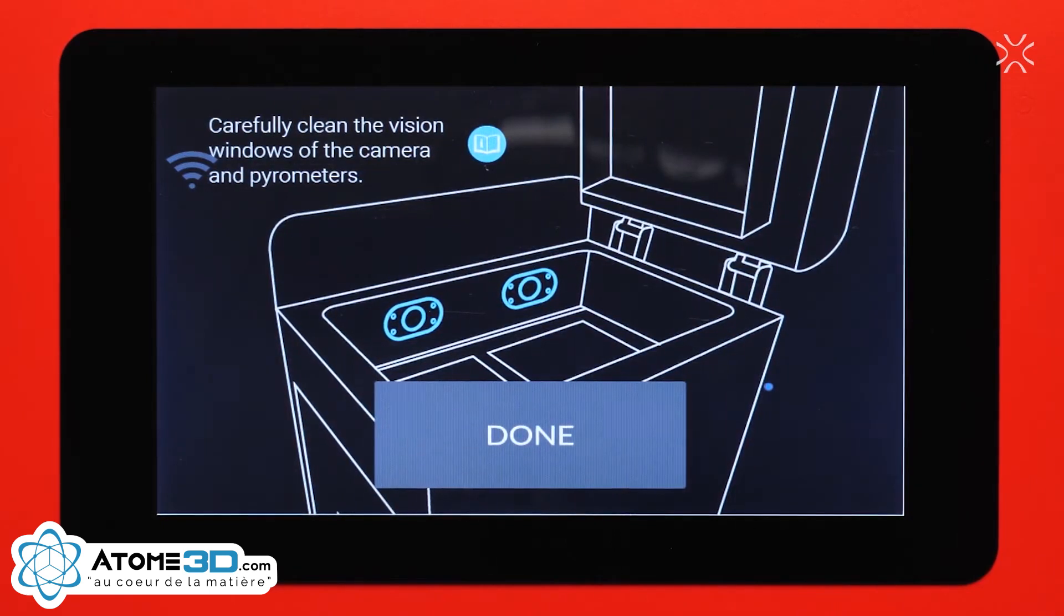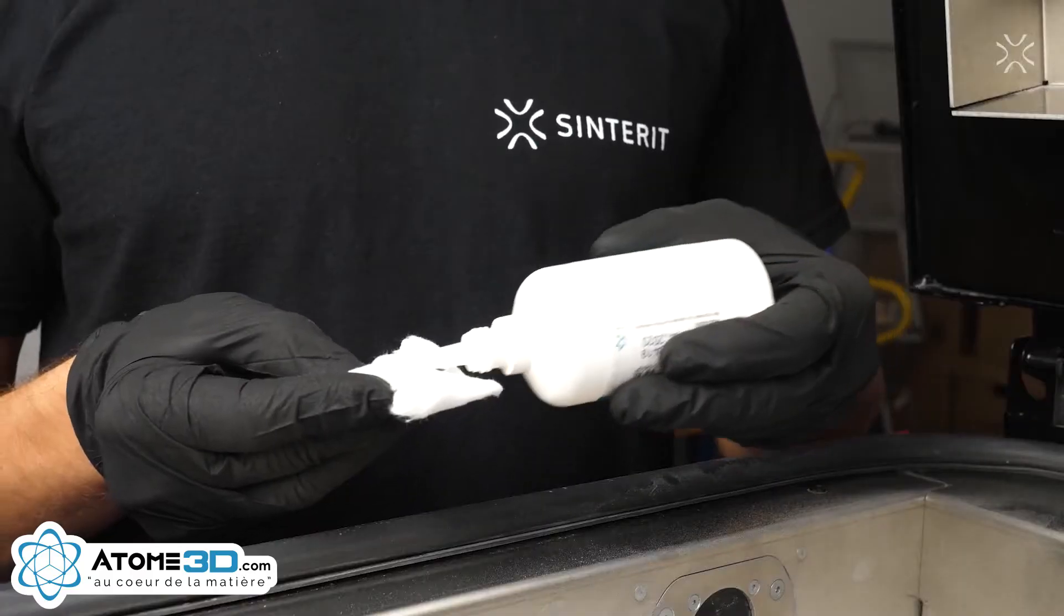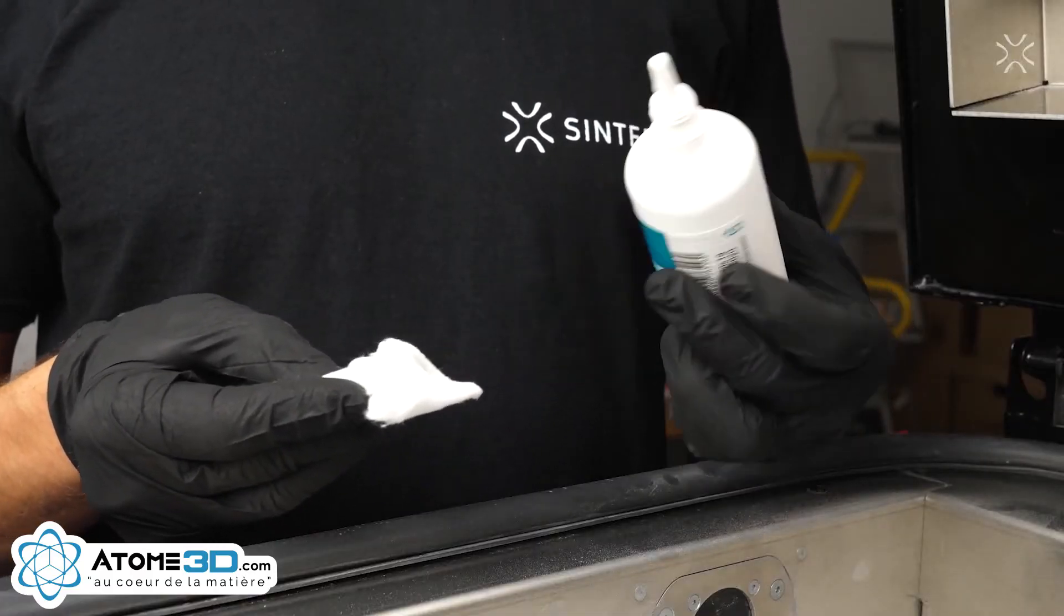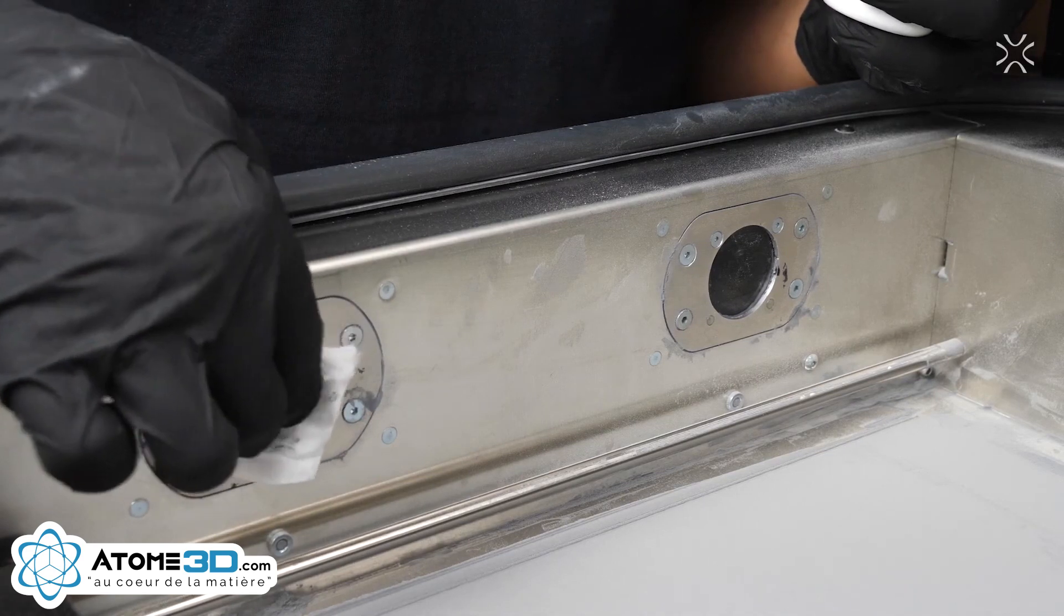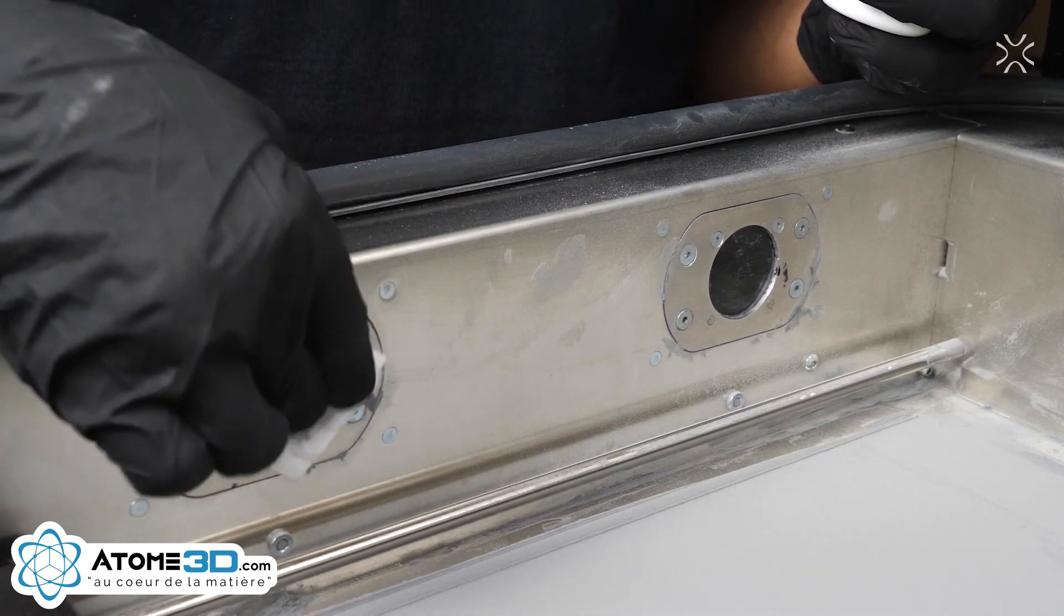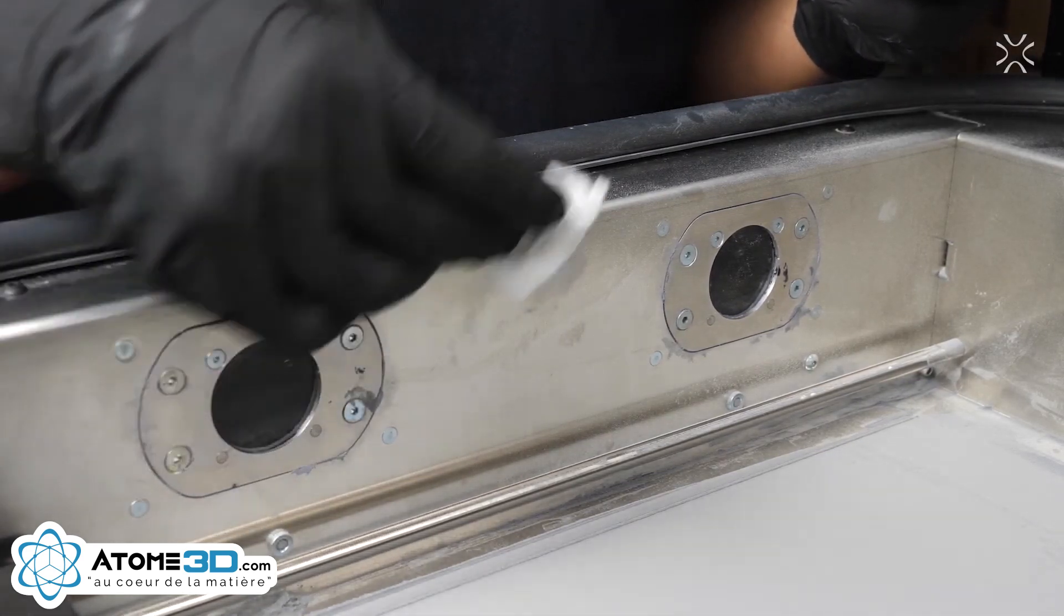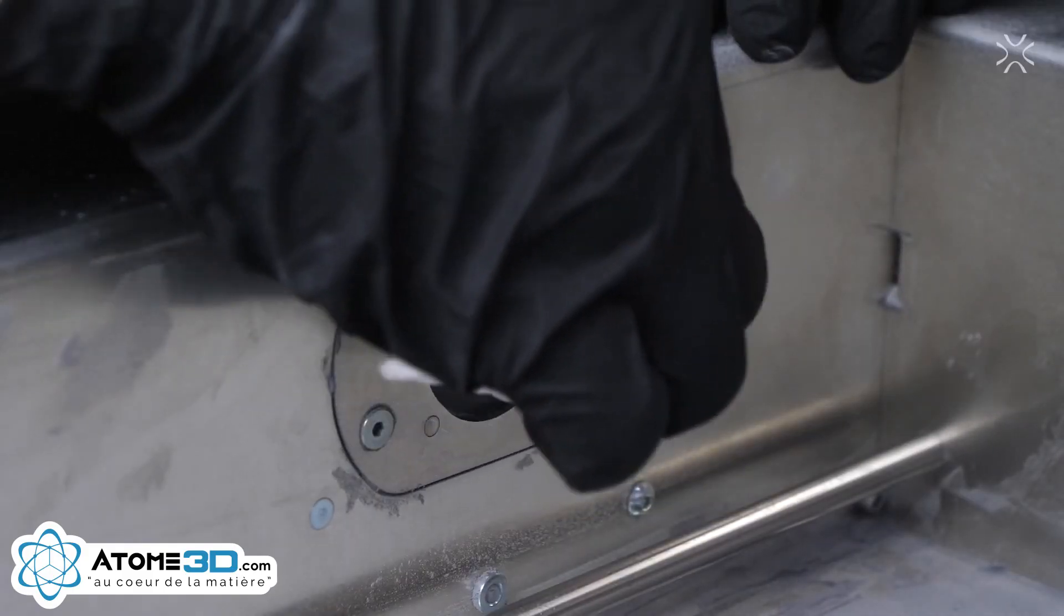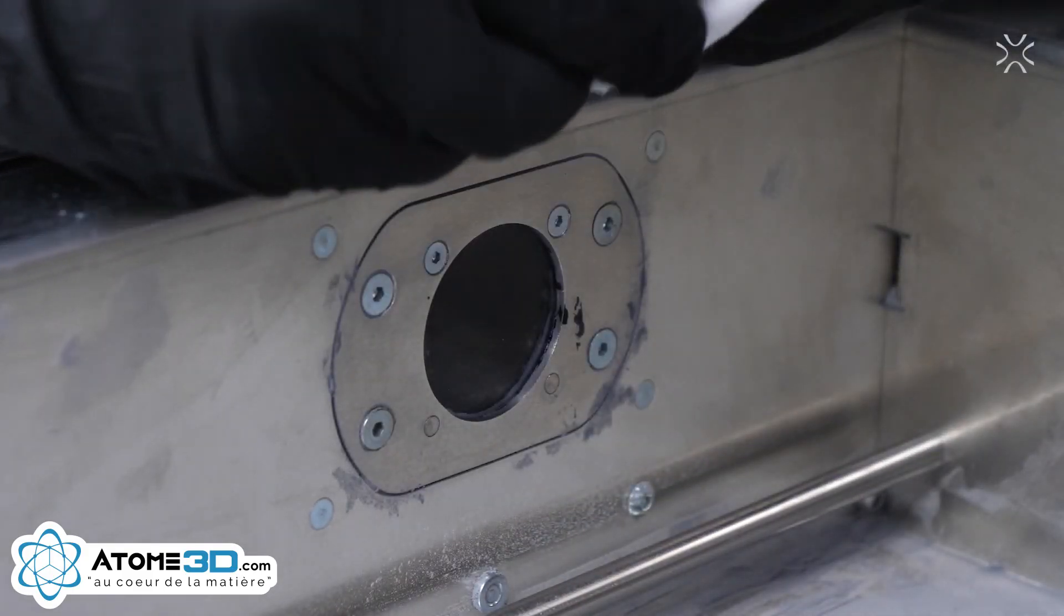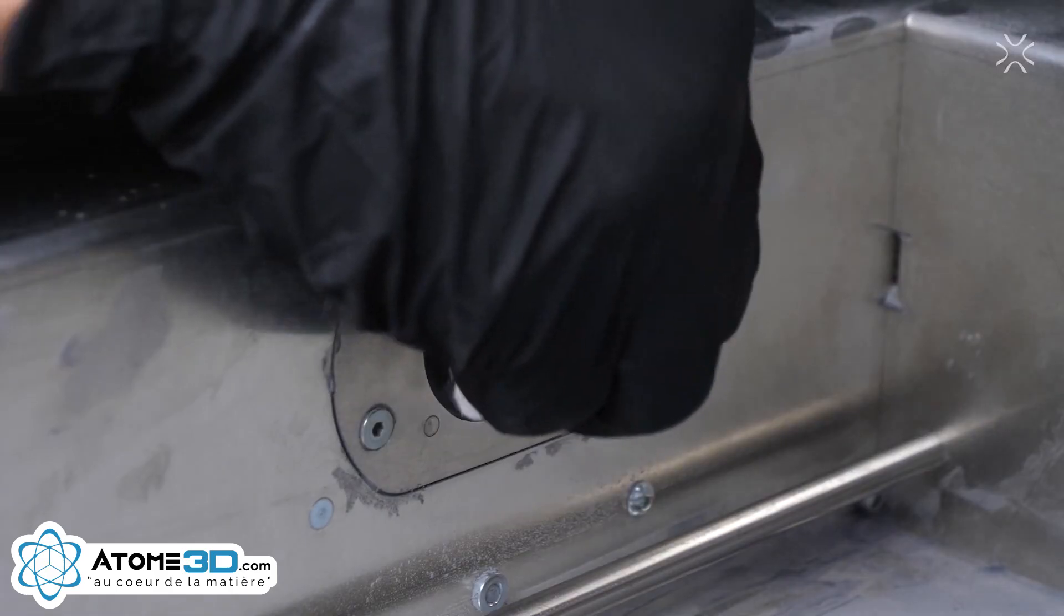In the next step, you should clean two Pyrometer's window modules. To do it, use a clean piece of cotton cloth soaked with ethyl alcohol. It is best to do it in two steps: first with alcohol, and then the dry version without it. Click Done.